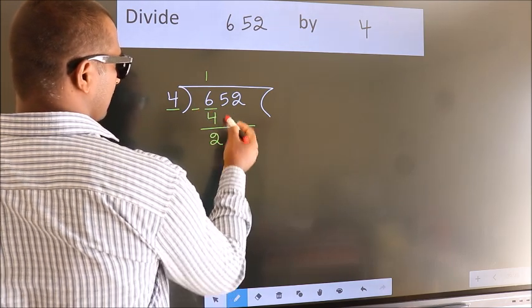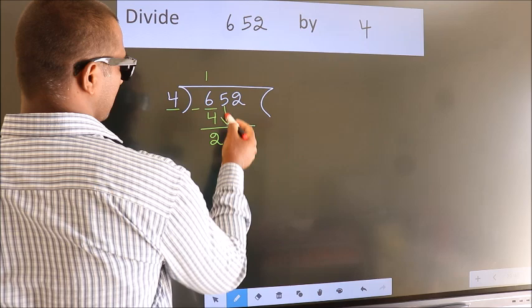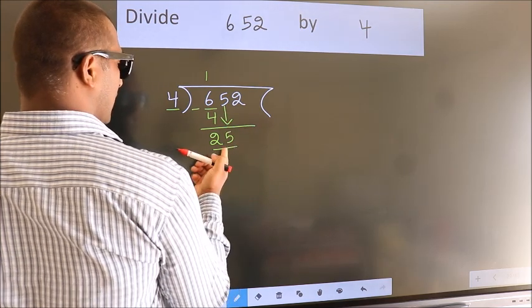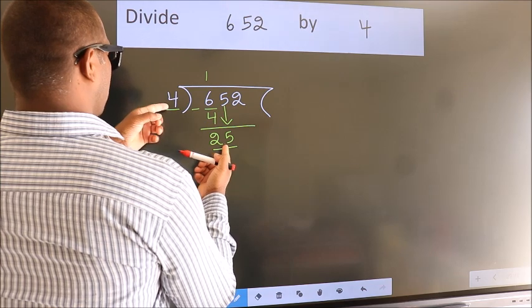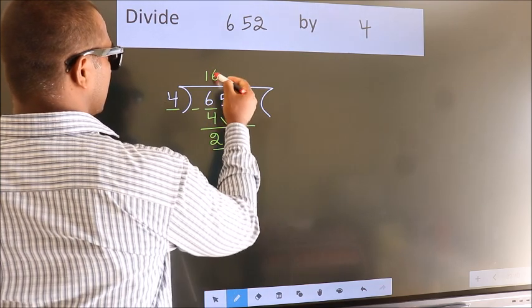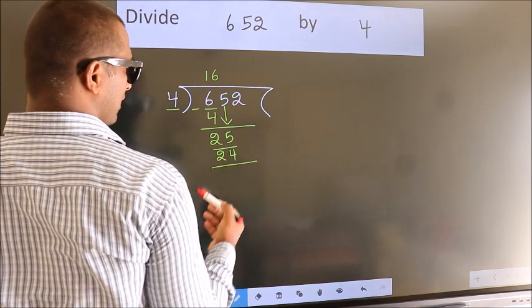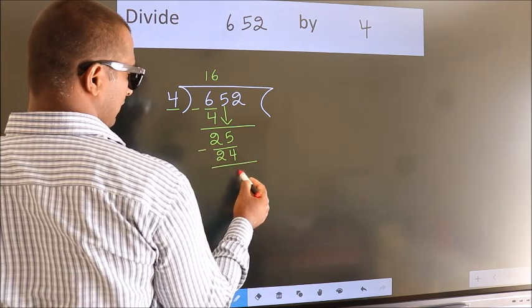After this, bring down the beside number. So 5 down. So 25. A number close to 25 in 4 table is 4, 6, 24. Now we subtract. We get 1.